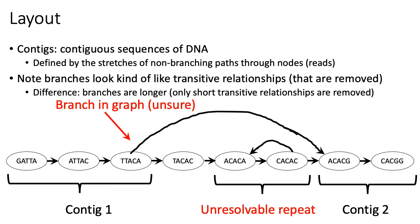Another important feature of this graph is that you see a loop — a cycle. If you look at the node representing read ACACA, there's an edge to CACAC and another edge going back to ACACA, forming a loop. This is suggestive of a repetitive sequence in that region of the genome. It's unresolvable because many repetitive sequences could have been at that genomic location and would give rise to exactly the same overlap graph. So in genome annotation, we mark that region as an unresolvable repeat and return the two contigs on either side.